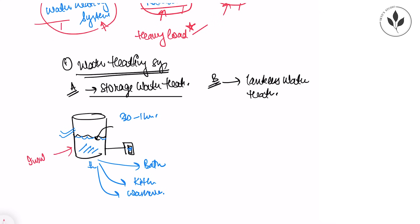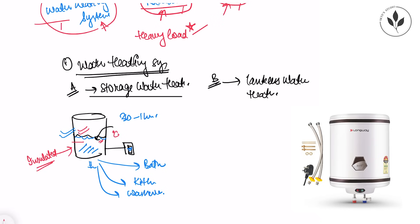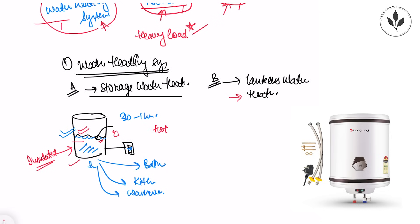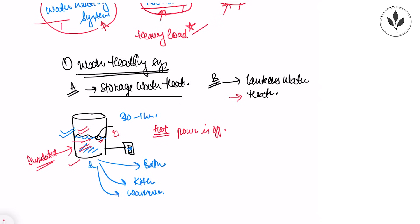In this type of geyser, your tank will be insulated. When the water heats up, it will keep its temperature - it will stay warm or hot for a longer period compared to your tankless water heater. It provides hot water even when the switch is off, even when the power is off, because we're storing this hot water in an insulated tank. That's why we call it storage water heater.